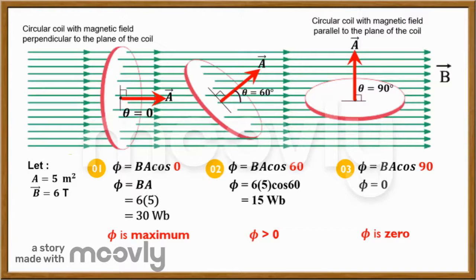For the second orientation, vector A is 60 degrees to vector B. So that gives you 6 times 5 times cos 60, and that is 15 Weber.